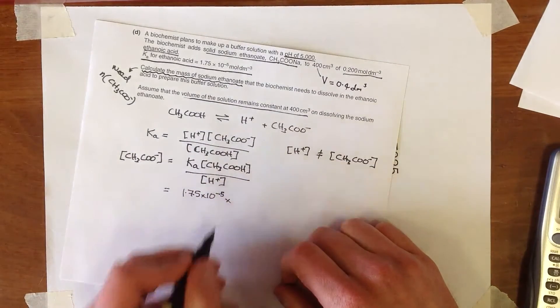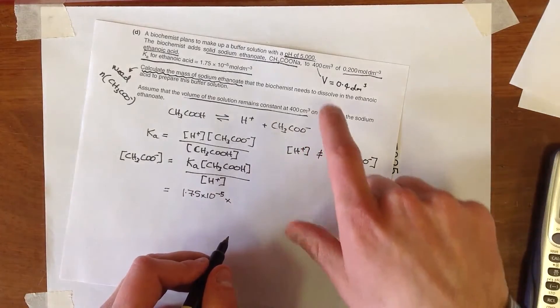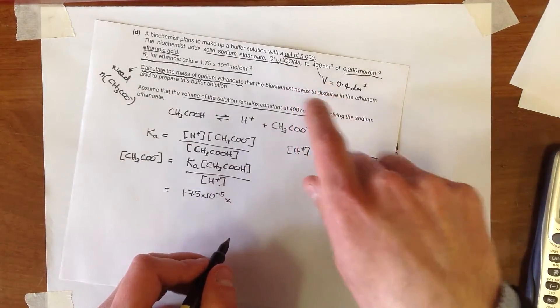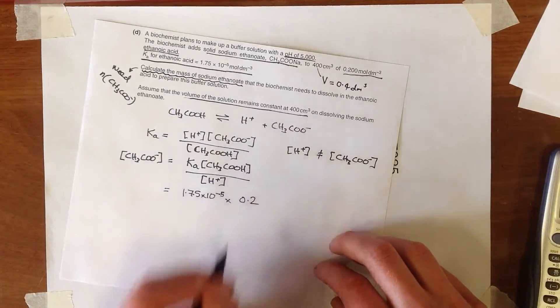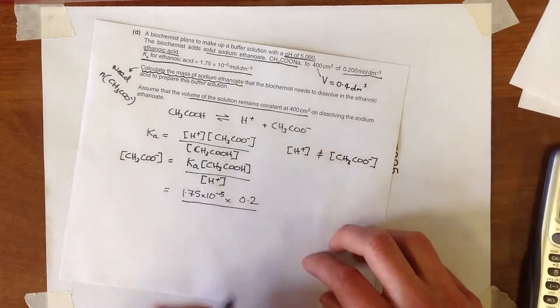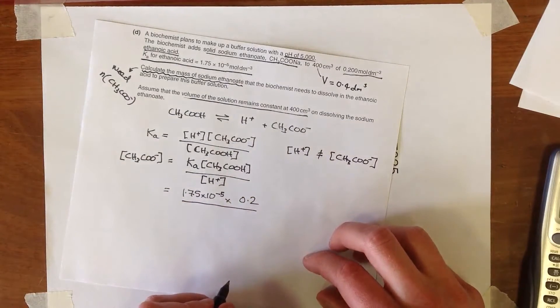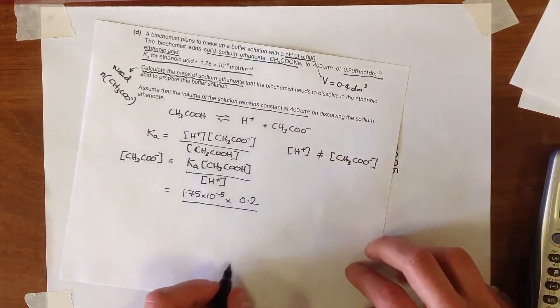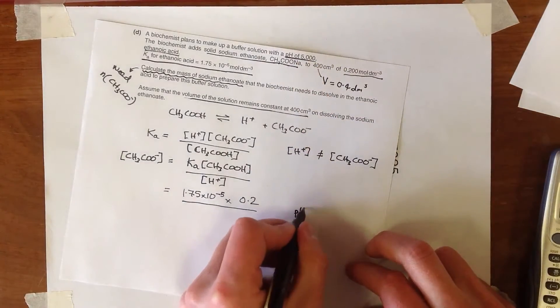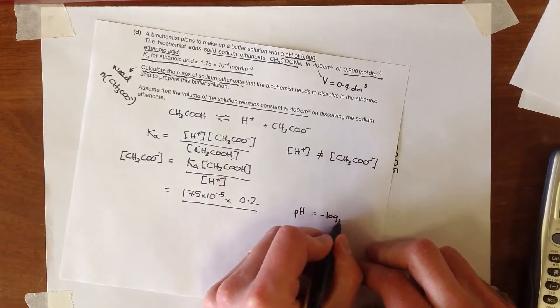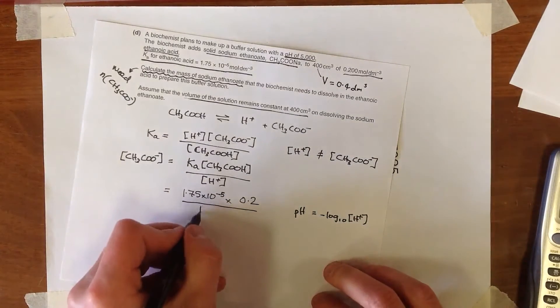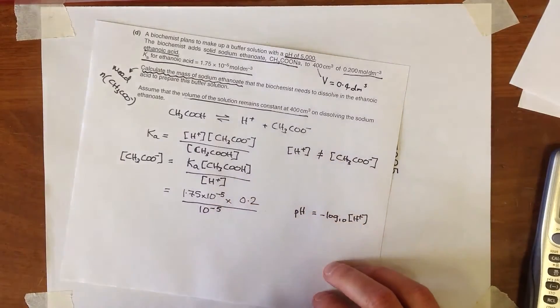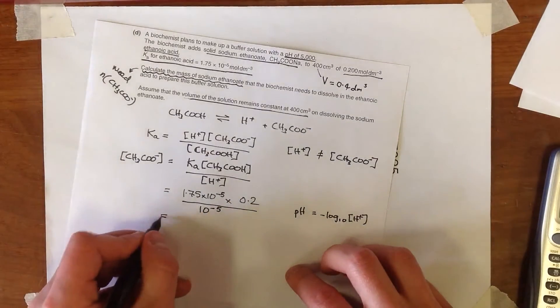How are we going to work out the concentration of ethanoic acid? Well, we know that because we've been told that ethanoic acid is in a concentration of 0.2 moles per decimetre cubed. How are we going to get the concentration of H+ ions? Well, we've told the pH of the solution, so we know that pH is minus log to the base 10 of H+ concentration, and so we can just simply write this as 10 to the power minus 5.